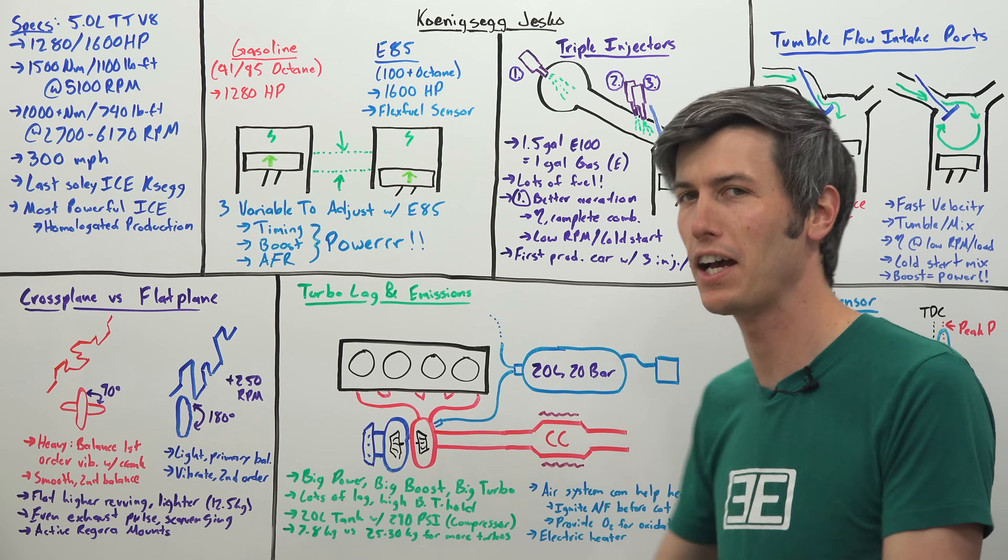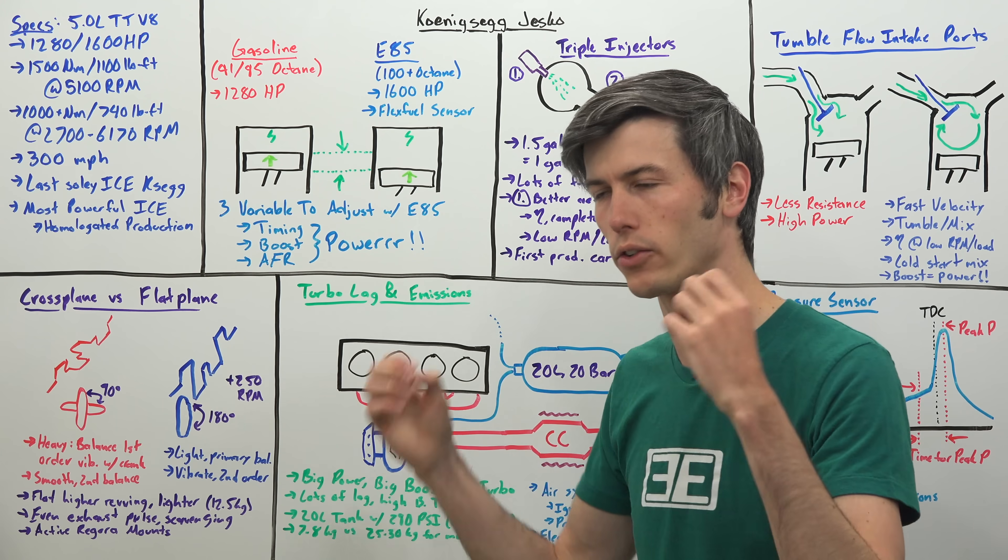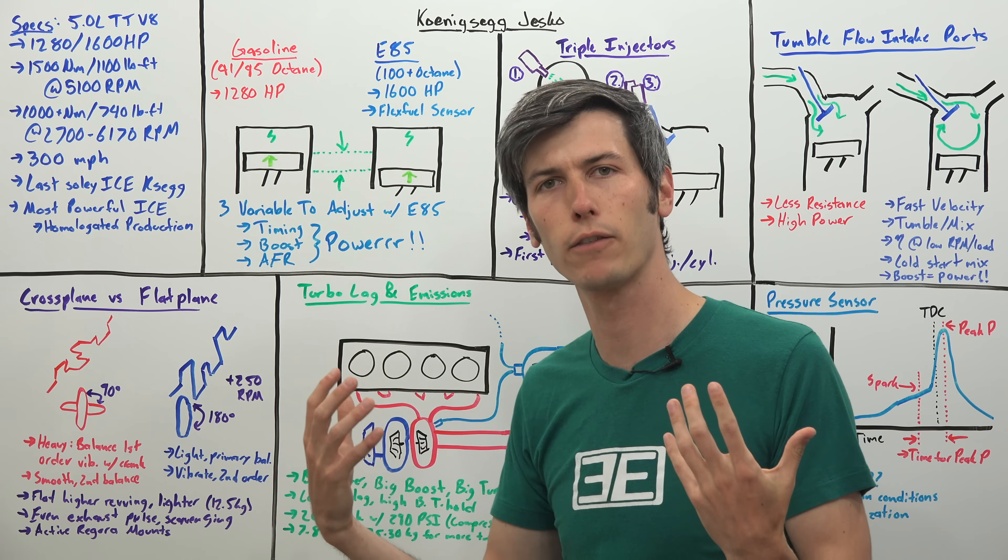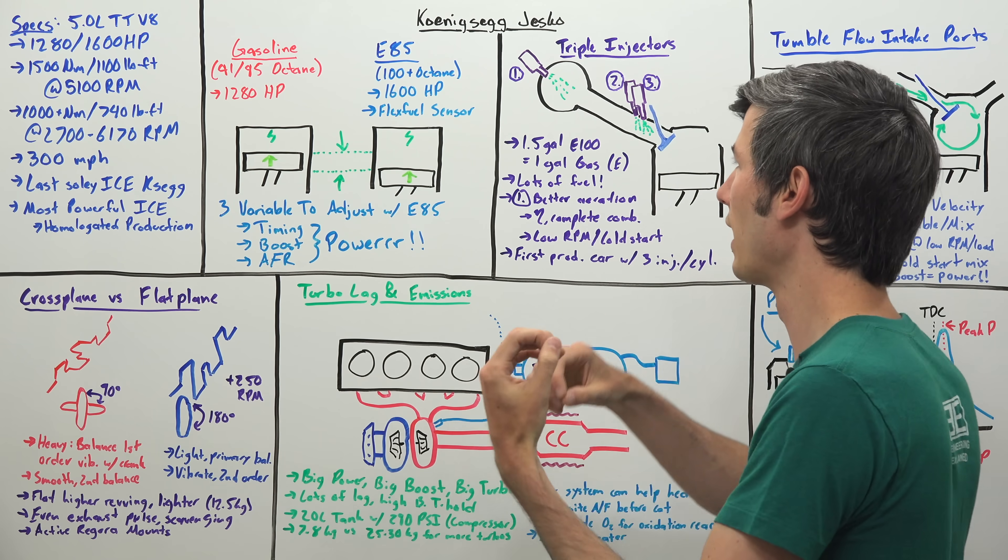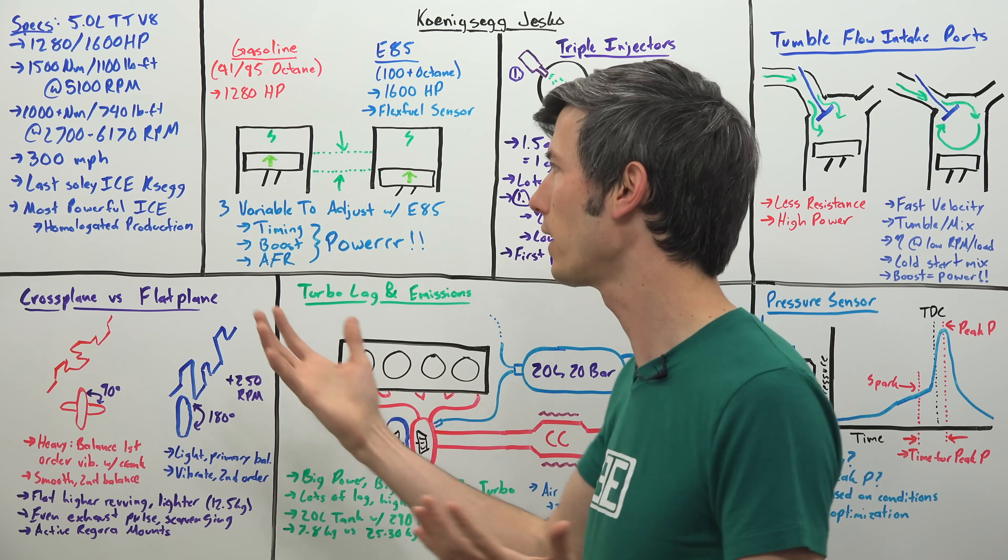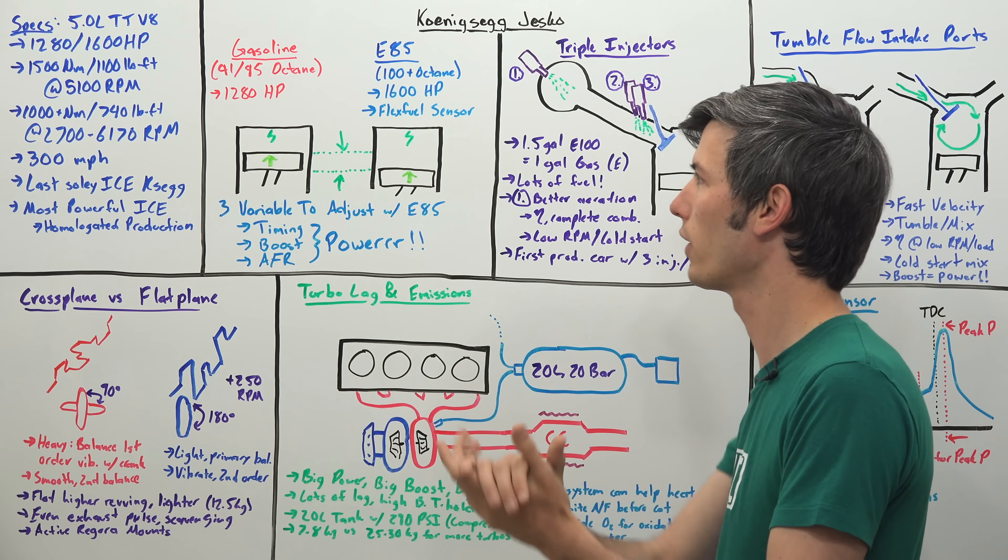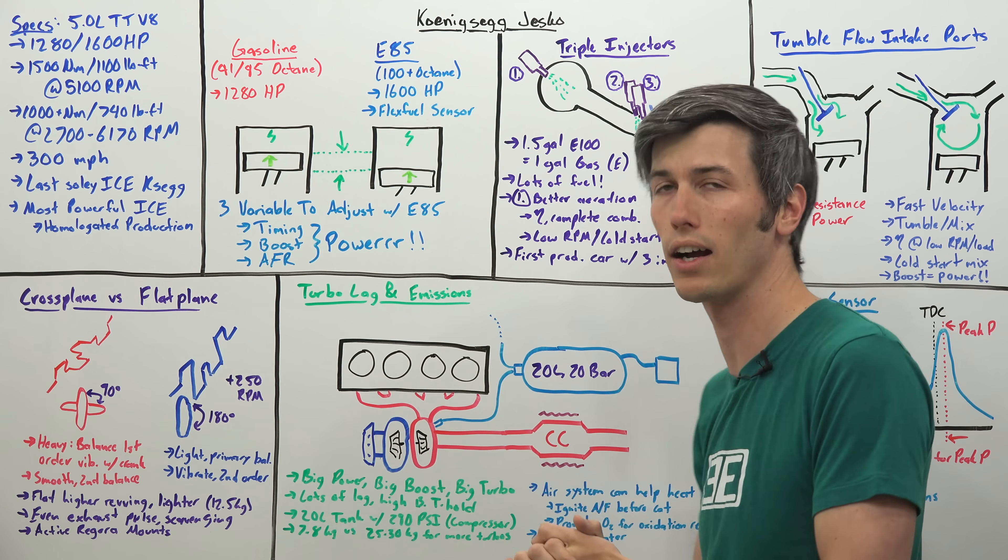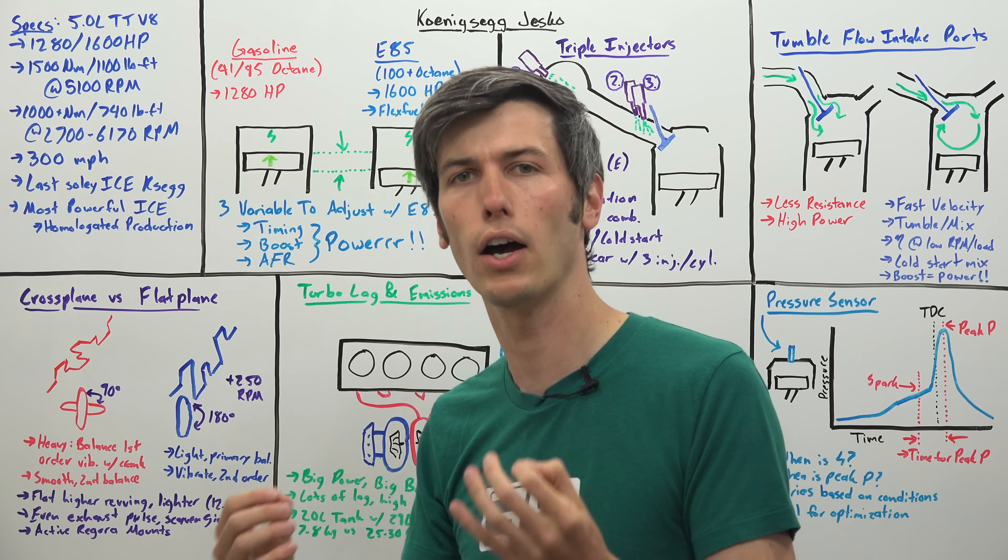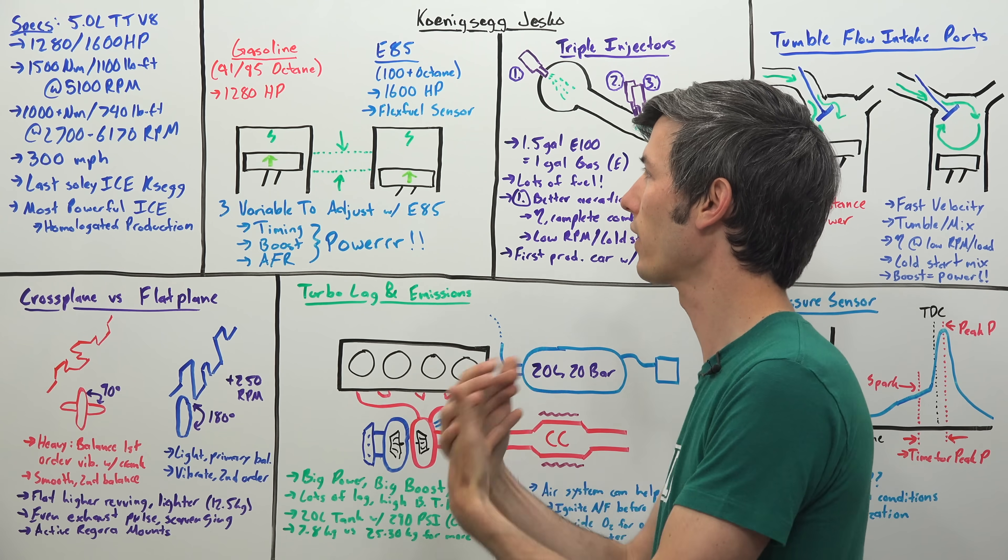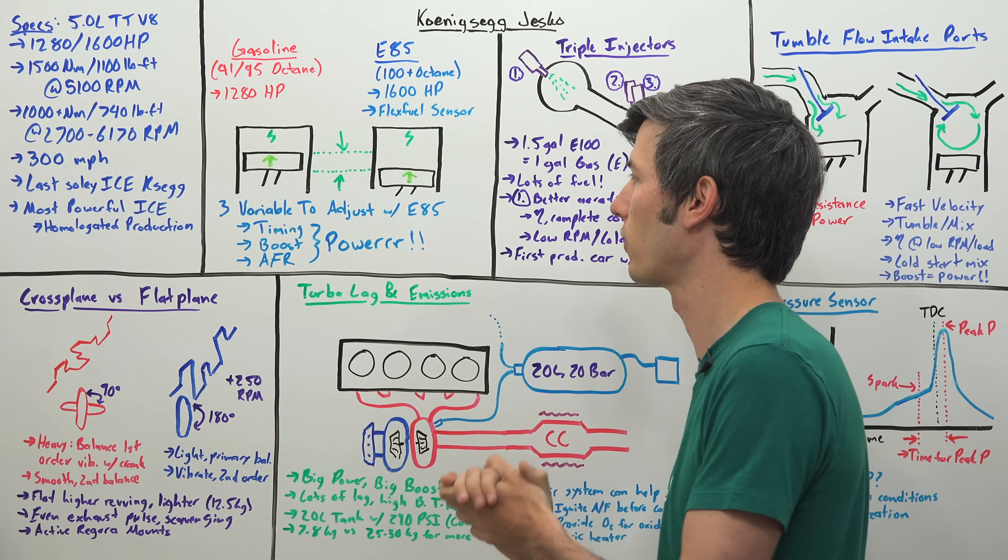First off, gasoline versus E85. It can run on either, so it has a flex fuel sensor. It's able to determine what fuel is going into those injectors, what's being injected into the engine. It reads that, sends that information to the ECU which determines how much power it can make and adjusts things like timing, air fuel ratio, boost accordingly. With gasoline, 91 octane in the US, 95 octane in Europe, it will make 1280 horsepower. Using E85 which has a higher octane rating, they're able to create 1600 horsepower.